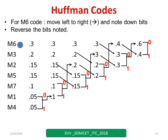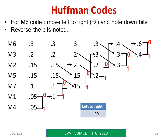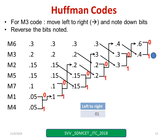Now I have to move left to right and note down the bits; later I have to write them in reverse order — that becomes the code for that particular symbol. Observe M6: I move left to right, wherever 0.3 is going, read those bits. Moving left to right I note 0s and 1s that come in between — I got 0, then 0. So left to right I got 0, 0, and reversed I also get 0, 0. Now for M3, move from left to right, observe the bits: I got 0, then 1. Reverse this — I get the code as 1, 0.